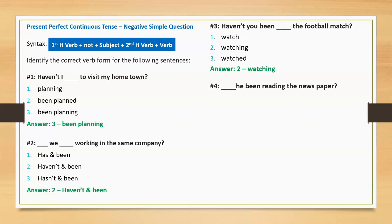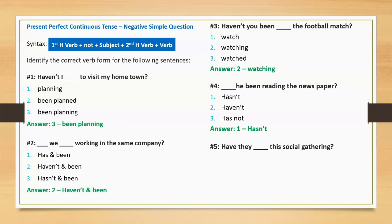Question four: 'Blank he been reading the newspaper?' Options: hasn't, haven't, has not. Correct answer: hasn't. Full sentence: 'Hasn't he been reading the newspaper?'